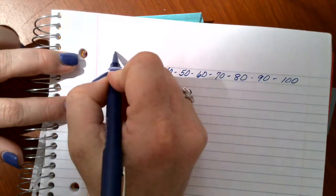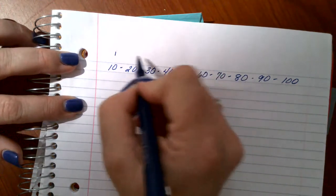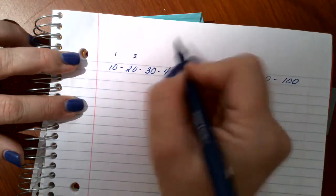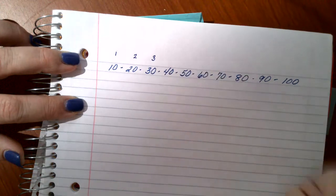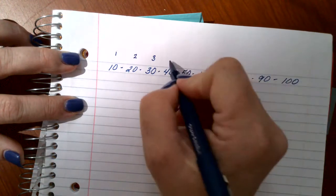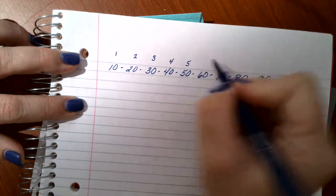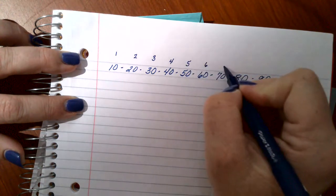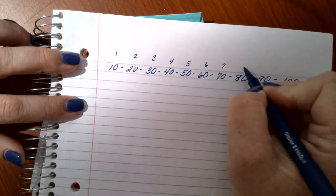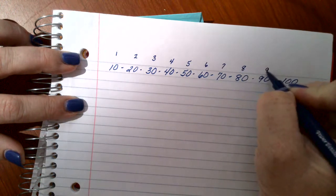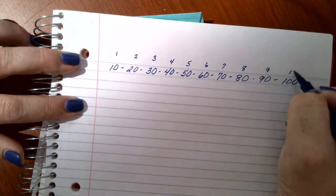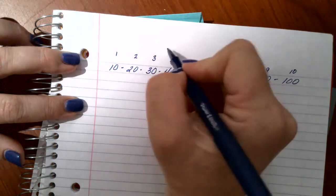one ten is ten, two tens is 20, three tens is 30, four tens is 40, five is 50, six is 60, seven is 70, eight is 80, nine is 90, and one hundred is ten tens.